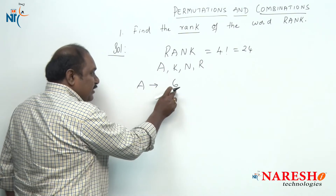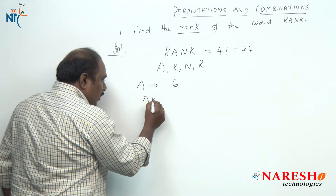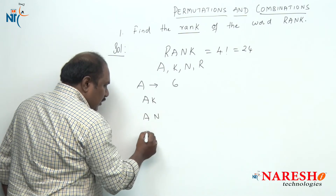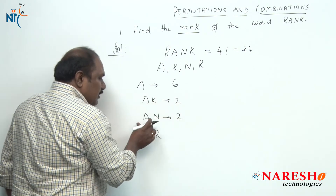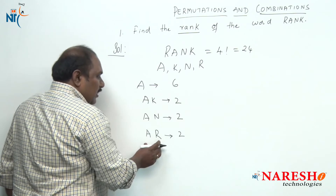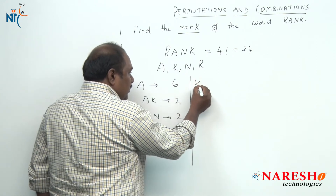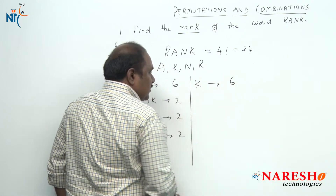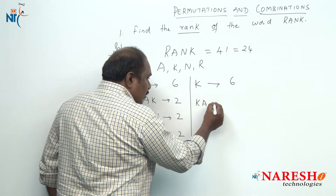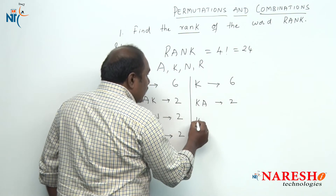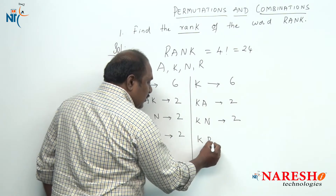In these six arrangements starting with A, we have two arrangements which start with AK, two arrangements which start with AN, and two arrangements which start with AR according to alphabetical order. Next, we come across the arrangements which start with K: two arrangements start with KA, the next two start with KN, and the next two start with KR.